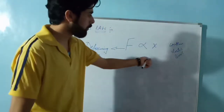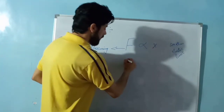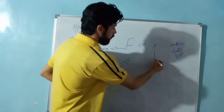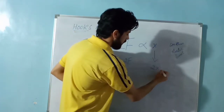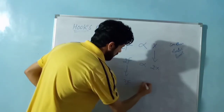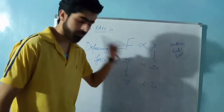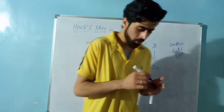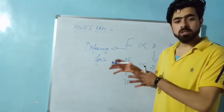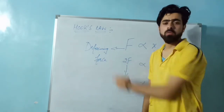If F is proportional to x, then if I double the force to a magnitude of 2F, the extension becomes 2x. This is directly proportional. If the force is 3F, then the extension becomes 3x. Hooke defined this relationship.